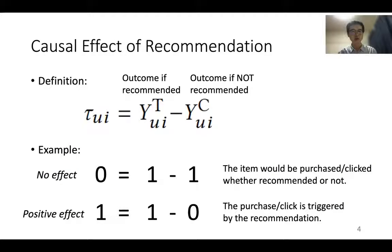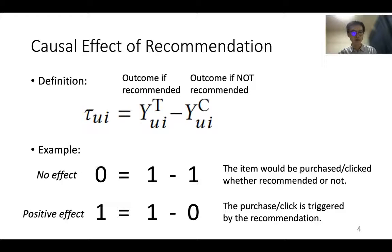The causal effect of recommendation is defined as the difference between outcome if recommended and outcome if not recommended. For example, if the item would be purchased whether recommended or not, then tau_UI becomes 0 and there's no causal effect. If the purchase is triggered by the recommendation, tau_UI becomes 1 and there's a positive causal effect.